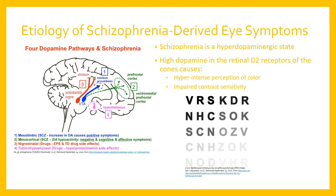In contrast, the mesocortical pathway shows dopamine hypoactivity, causing negative, cognitive, and affective symptoms. Some drugs can cause other systems to activate too much, and typical antipsychotics can actually over-activate the nigrostriatal and the tuberoinfundibular pathways.